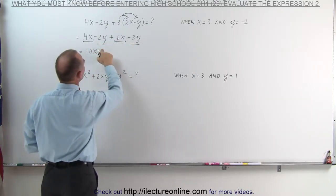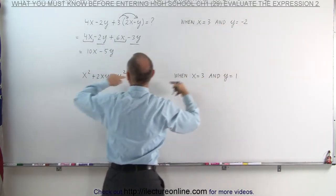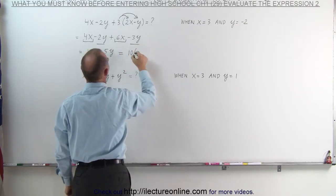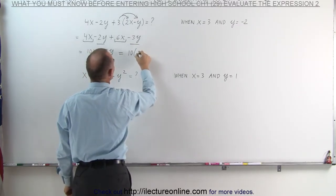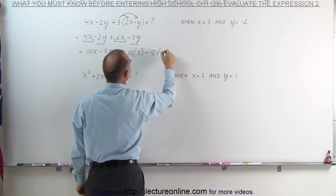Now we can go here and we say when x is equal to 3 and y is equal to negative 2 we're going to plug those values into our two unknowns. This then becomes 10 times instead of x we write the number 3 minus 5 times instead of y we write the number negative 2.